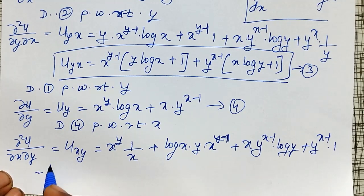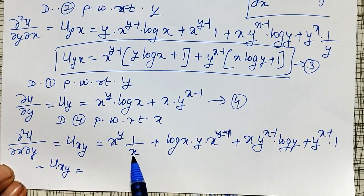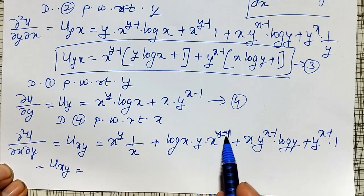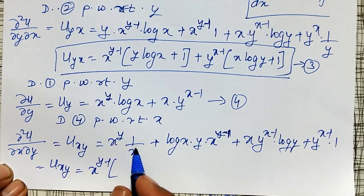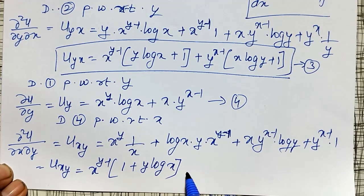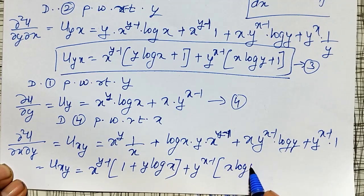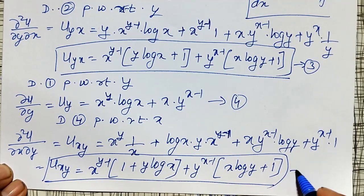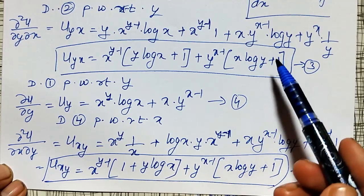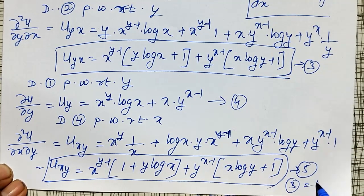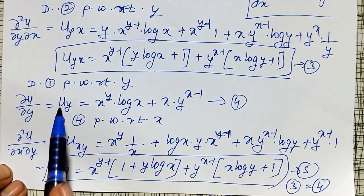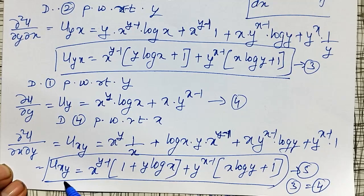Simplifying u_xy: taking x raised to y minus 1 common from the first two terms leaves 1 plus y log x. Taking y raised to x minus 1 common from the next two terms leaves x log y plus 1. This is u_xy, equation number 5. Comparing equations 3 and 5, both are the same. Therefore, u_yx equals u_xy.